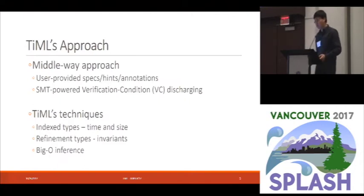Our approach, Timo's approach, is a middle-way approach. We allow the users to write annotations, to be used as specifications and hints. And we use an SMT-solver-powered type checker to automatically discharge the verification conditions, or VCs, to avoid writing manual proofs. Timo uses three core techniques. It uses a thing we call index types to encode those times and sizes. And it uses refinement types to put constraints on those times and sizes, and also to encode invariants of data structures. And lastly, it uses a big O inference engine to automatically infer big O complexities of programs automatically without user annotations.